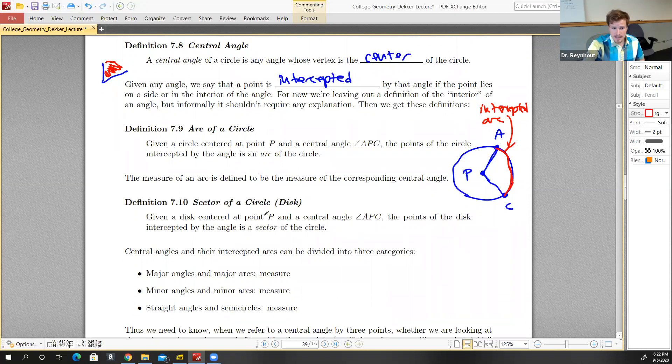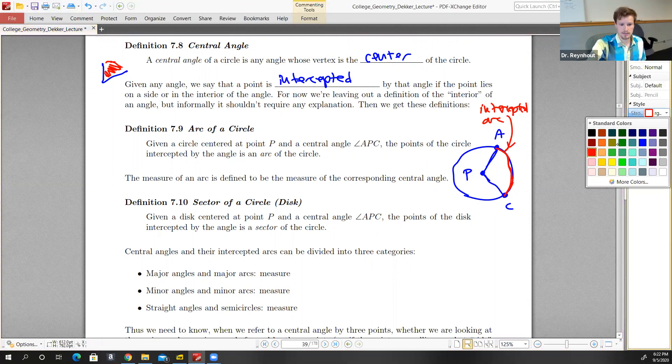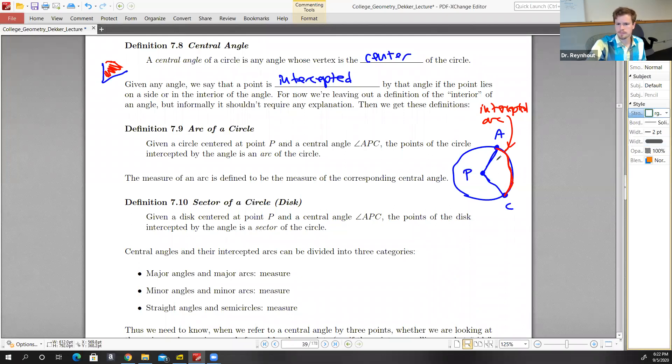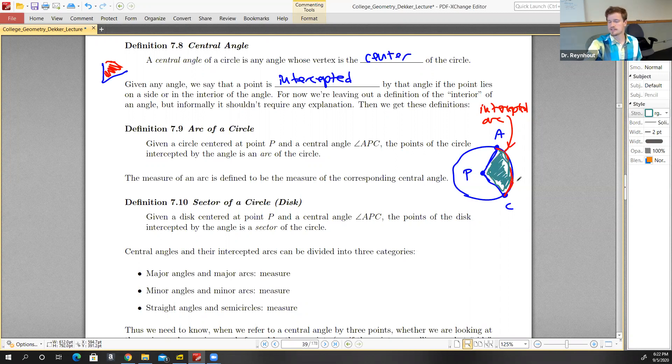Given a disc centered at P and a central angle APC, the points of the disc intercepted by the angle is a sector of the circle, or the sector of a disc. This includes those points on the circle and the disc - those would be our sector.